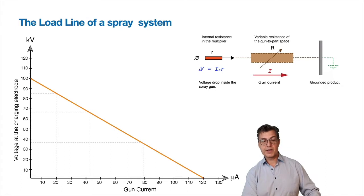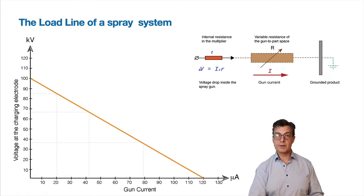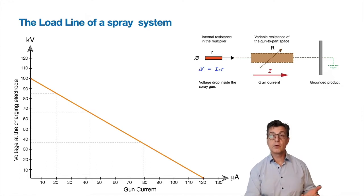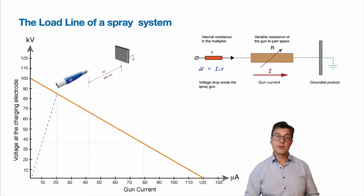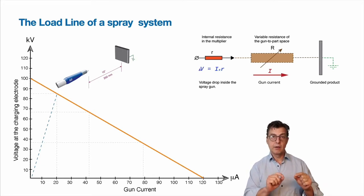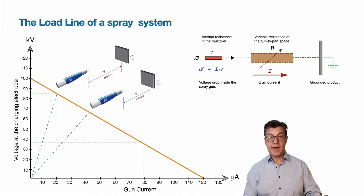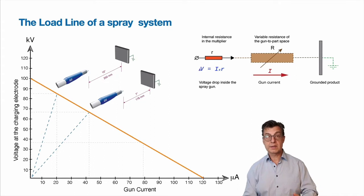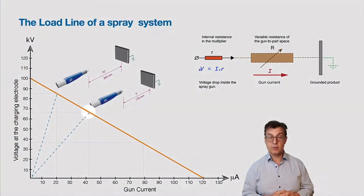Here you see an example of such a load line for a spray system with the maximum declared voltage output of 100 KV and the maximum short circuit current of 120 µA. We can also show the resistance of this load line, with dashed lines corresponding to different gun-to-part distances. For example, if the gun happens to be 10 inches or 250 millimeters away from the product, the line where the resistance corresponding to this gun-to-part distance intersects the load line will show exactly what the voltage at the tip of the gun and the current through the system will be. As we move the gun closer, the current increases because the resistance of the air gap gets lower, and the increased current creates greater voltage drop on the resistance inside the multiplier. In this particular case, the voltage will drop to below 70 KV and the current will be just over 40 µA.